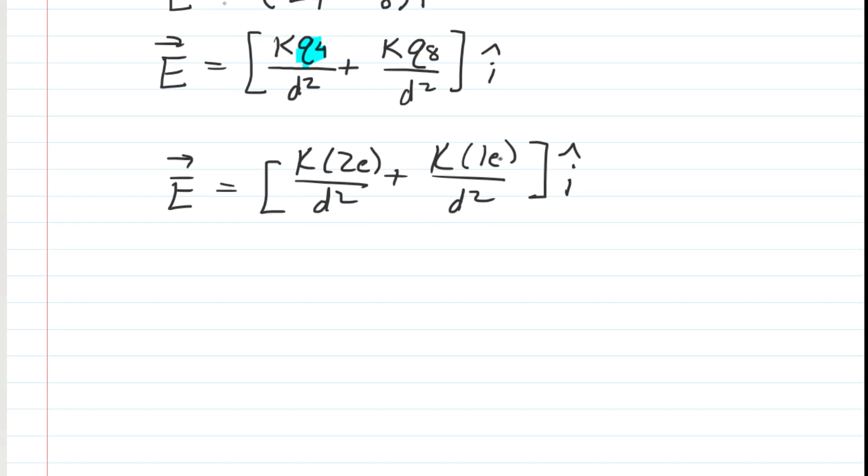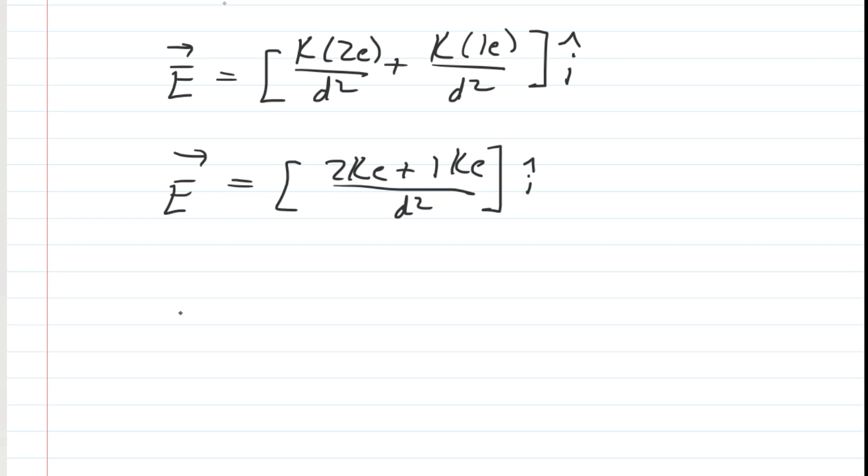Now we can simplify this because we have a common denominator. We have, let's see, 2KE plus 1KE all over D squared. And then we can simplify further, can't we? We can add those like terms in the numerator. So now we're just going to be left with 3KE over D squared.